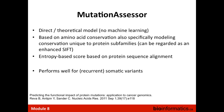Mutation Assessor is not machine learning-based but a direct theoretical model — an enhanced SIFT incorporating more information. It is based on amino acid conservation but specifically models conservation specific to different classes of proteins, since proteins evolve at different rates. It uses an entropy-based score to predict whether a protein substitution is likely or unlikely to be observed, and claims strong performance for recurrent somatic variants relevant to cancer genome analysis.